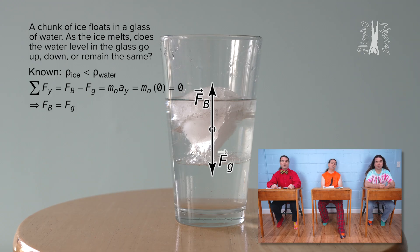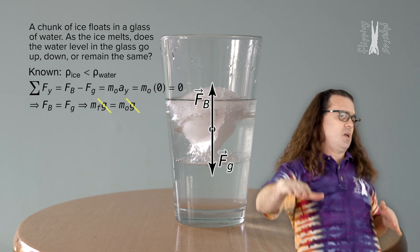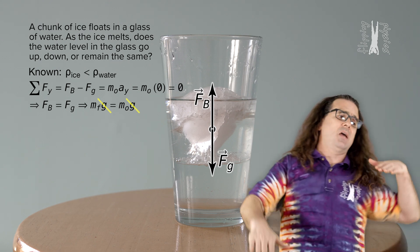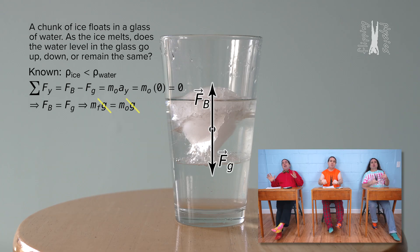And we can substitute in equations for that. The mass of the fluid displaced by the chunk of ice times gravitational field strength equals the mass of the object times gravitational field strength. Everybody brought gravitational field strength to the party! Everybody brought mass!